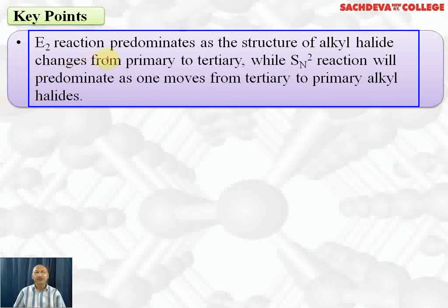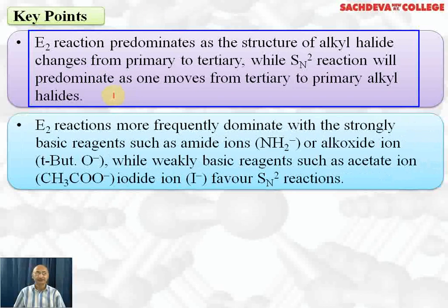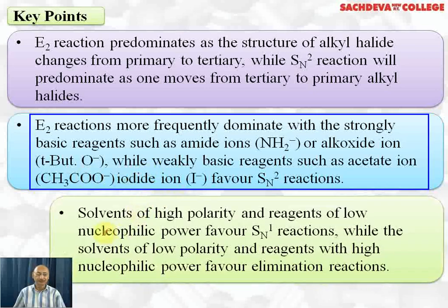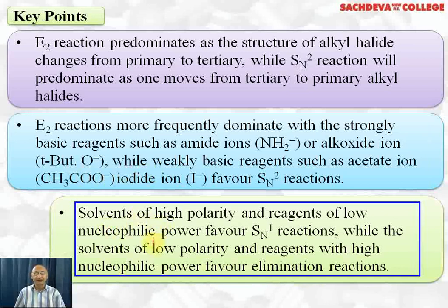Important points: E2 reaction predominates as the structure of alkyl halide changes from primary to tertiary, while SN2 predominates as one moves from tertiary to primary — this is the competition between elimination and substitution. E2 reactions more frequently dominate with strongly basic reagents such as amide ion, alkoxide ion, or tert-butoxide ion. Weakly basic reagents like acetate ion and iodide ion favour SN2 reactions. Solvents of high polarity and reagents of low nucleophilic power favour SN1, while solvents of low polarity and reagents with high nucleophilic power favour elimination.